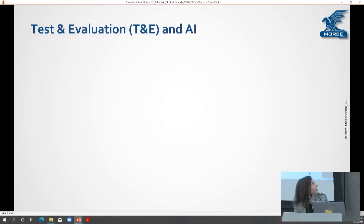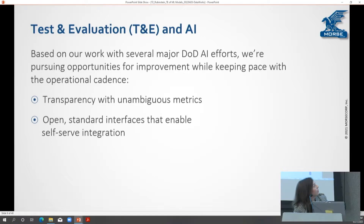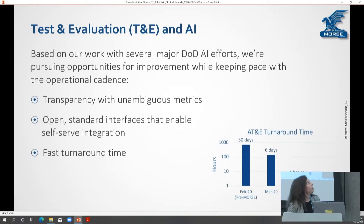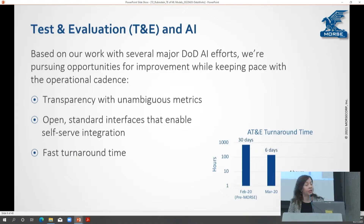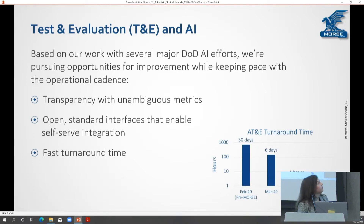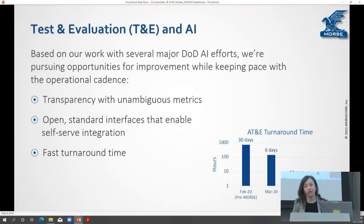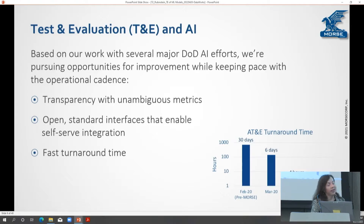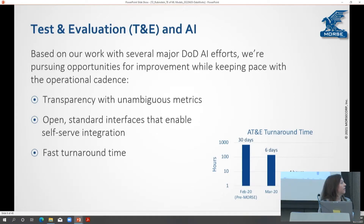Our approach to T&E at MORSE is threefold. We try to be transparent and have unambiguous metrics that we provide to vendors and the government for decision making. We have open standard interfaces that enable self-serve integration, getting at speed and scale — and that fast turnaround time. It's important to get feedback as soon as possible so vendors can react and work at making models that are more productive and useful to users.